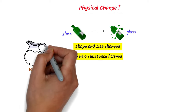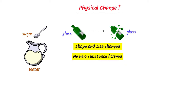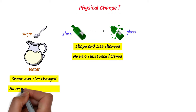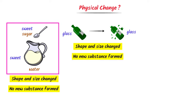Secondly, consider water in this pot. Let's add some sugar to it — we get a sugar solution. The shape and size of the sugar change but no new substance is formed. The sugar still retains its sweetness in the water, showing its presence. So it is a physical change.